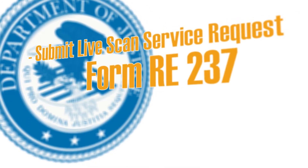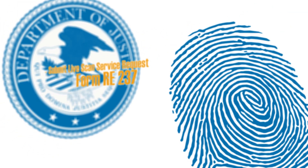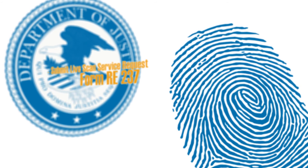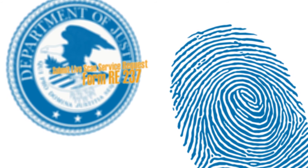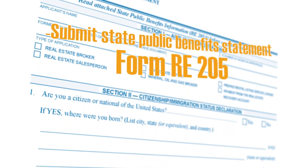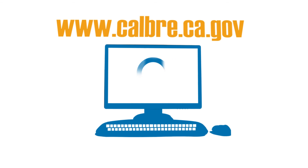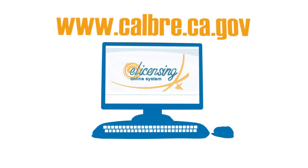Submit a completed LiveScan service request form RE-237. A license cannot be issued until Cal BRE receives fingerprint response information from the Department of Justice. Submit the state public benefits statement form RE-205 along with the required proof of legal presence documentation. The most common document that can be used for establishing proof of legal presence is a birth certificate or U.S. passport.